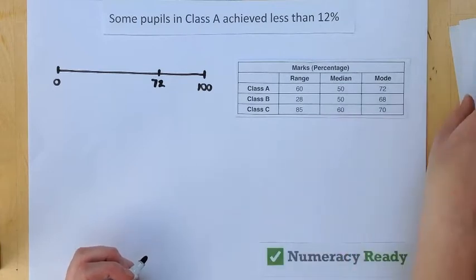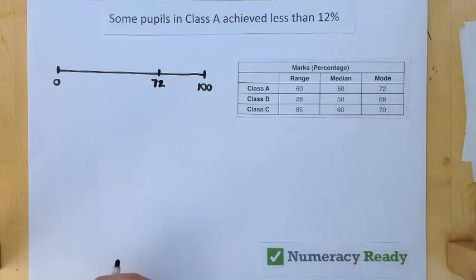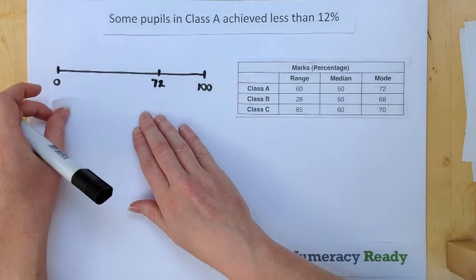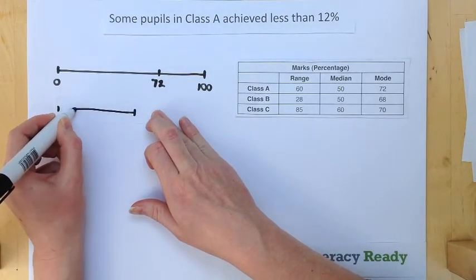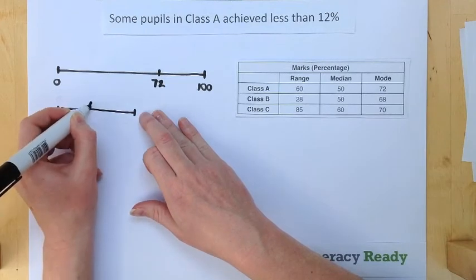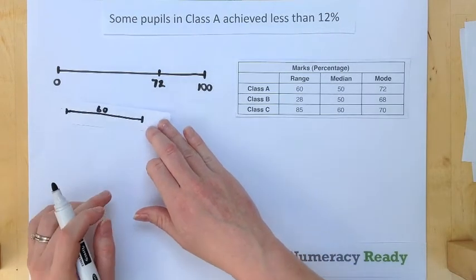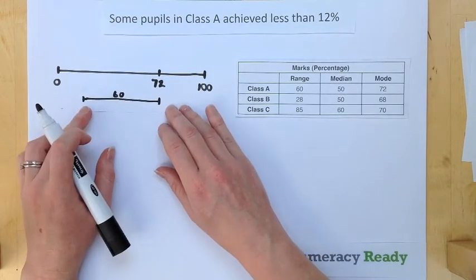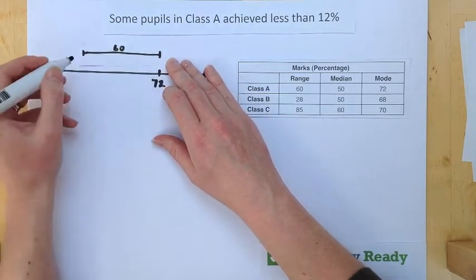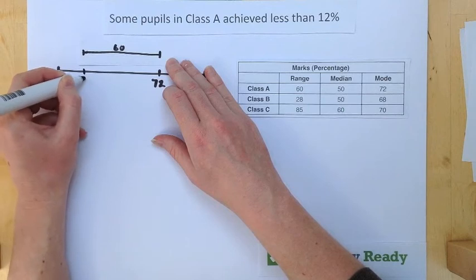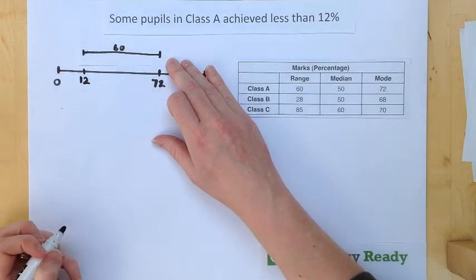We can use the fact that the range is 60 alongside our mode to check whether this statement is true or false. If the range is 60 and includes 72, if 72 is the highest mark, then 12 is the lowest possible mark that could have been achieved.